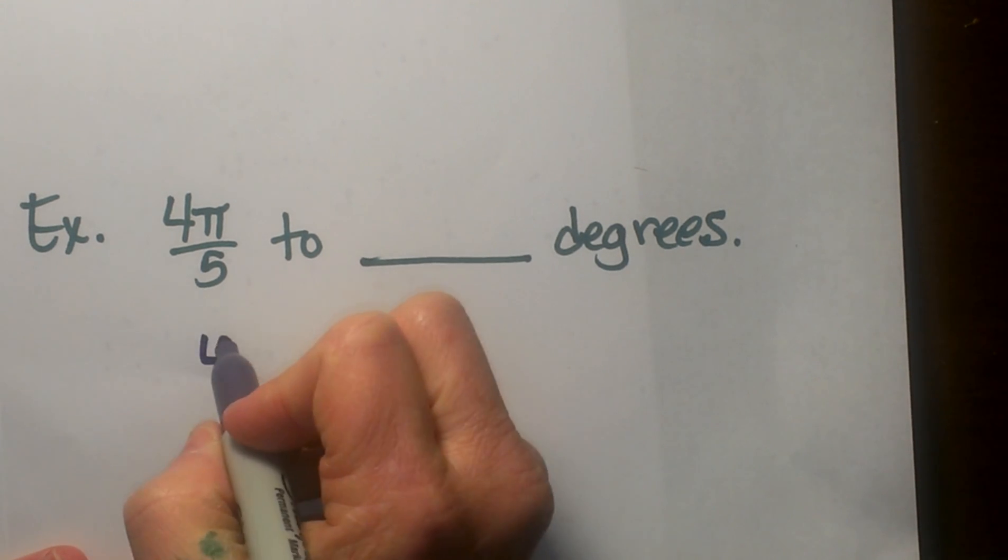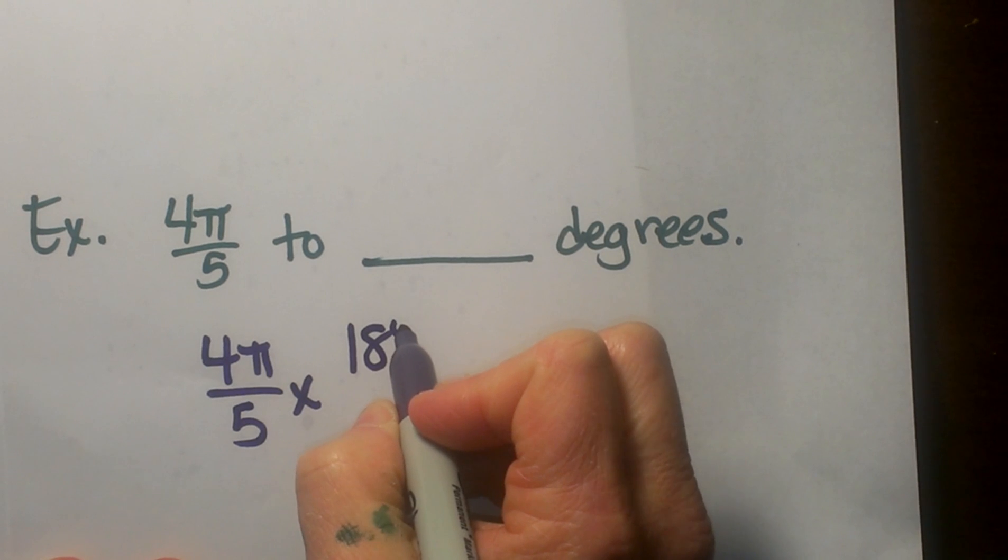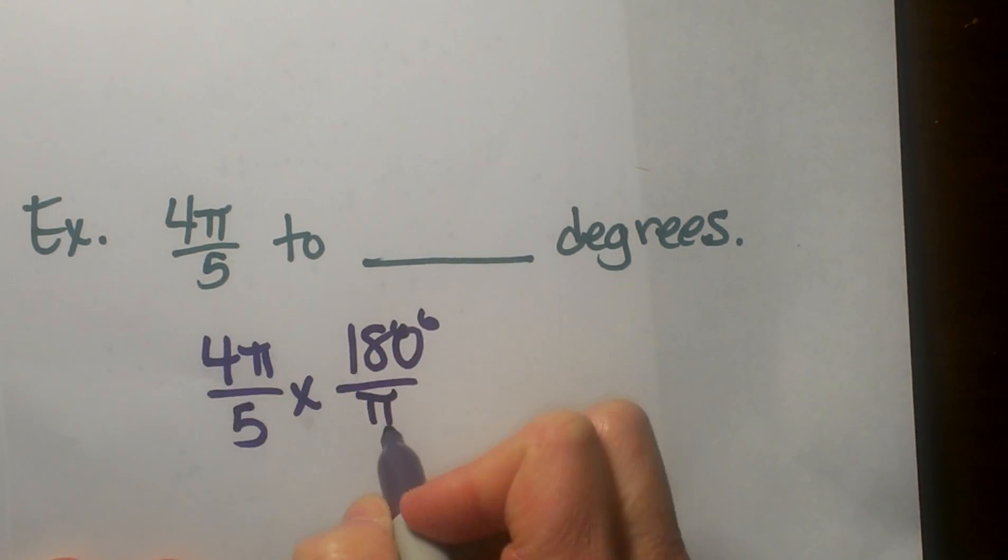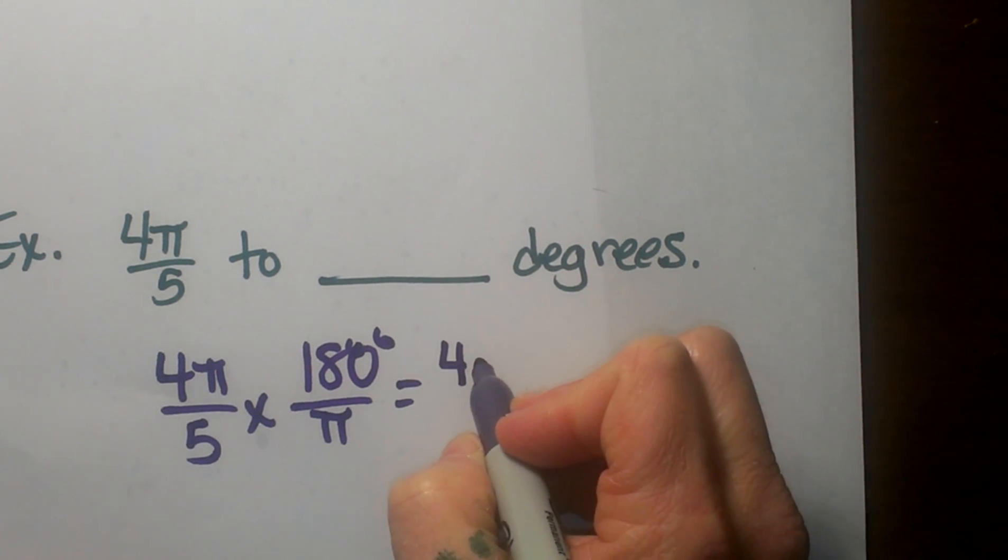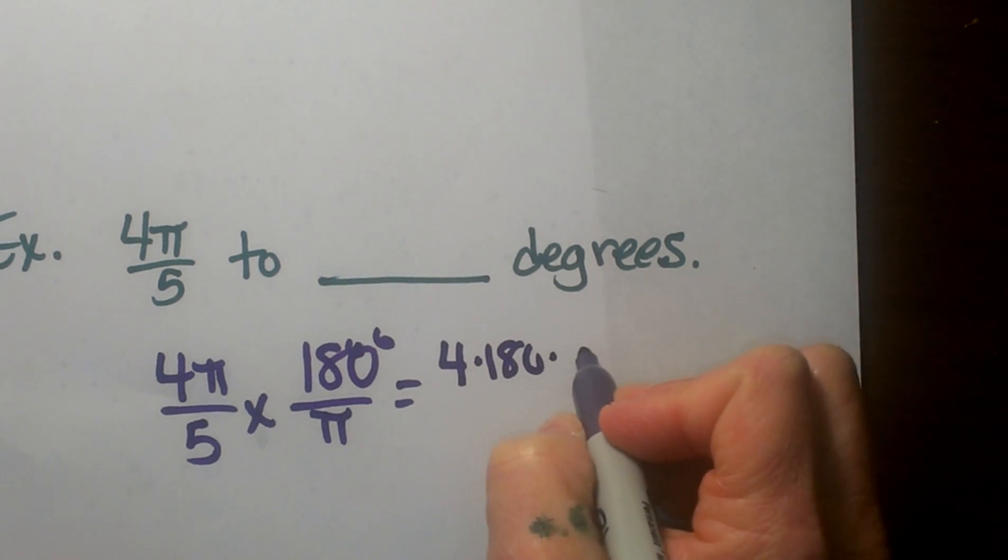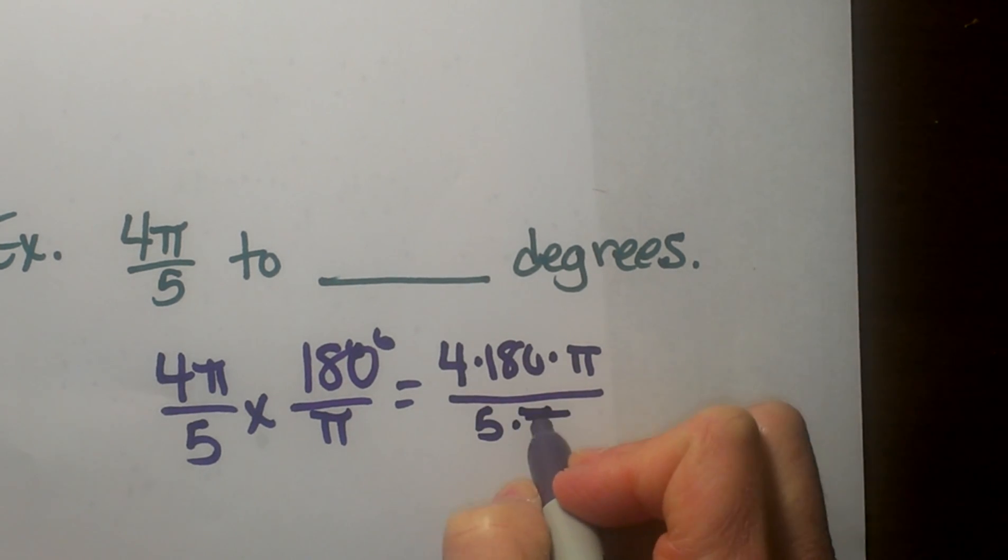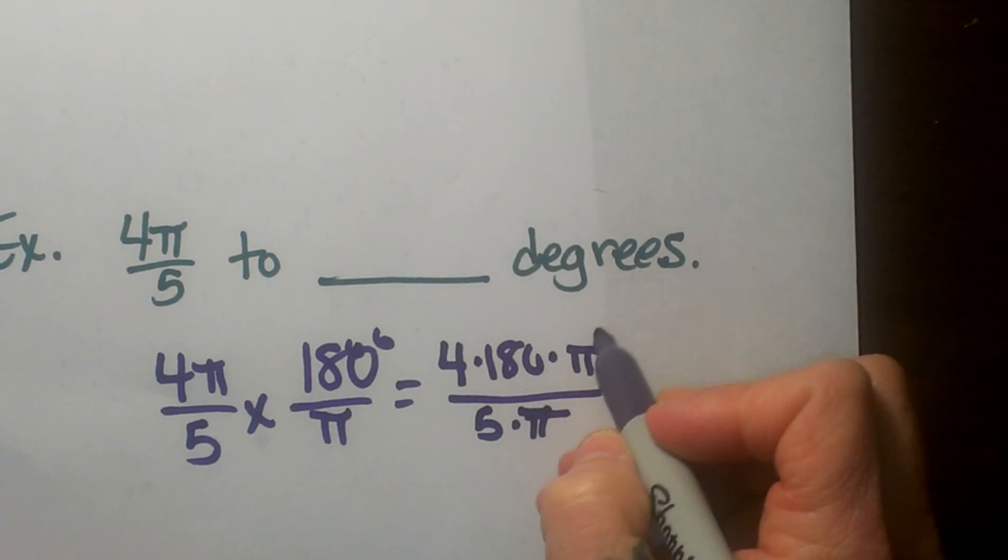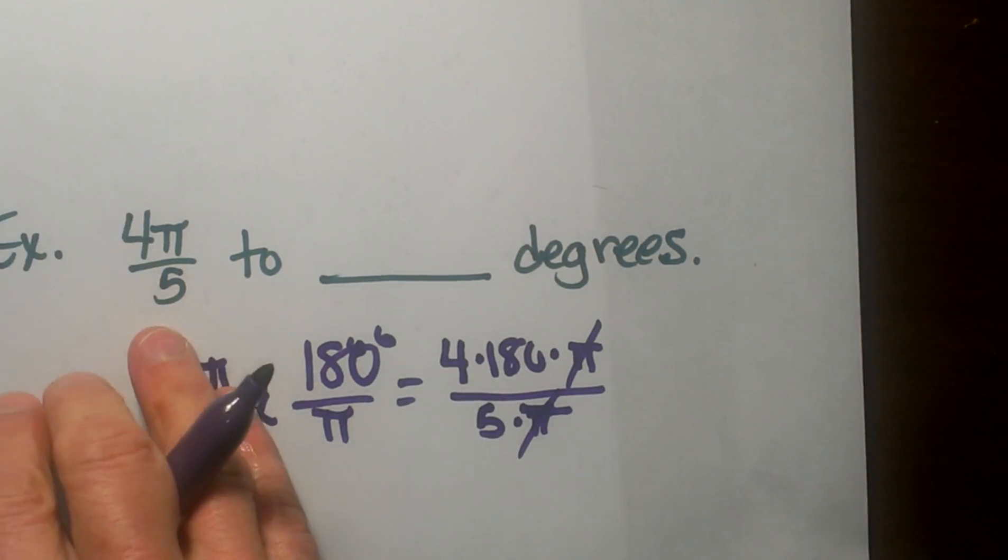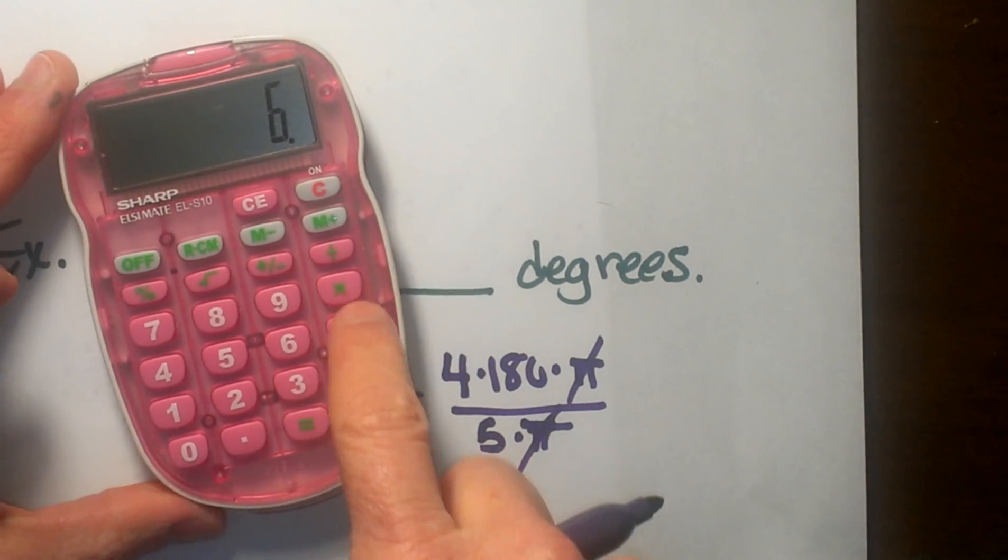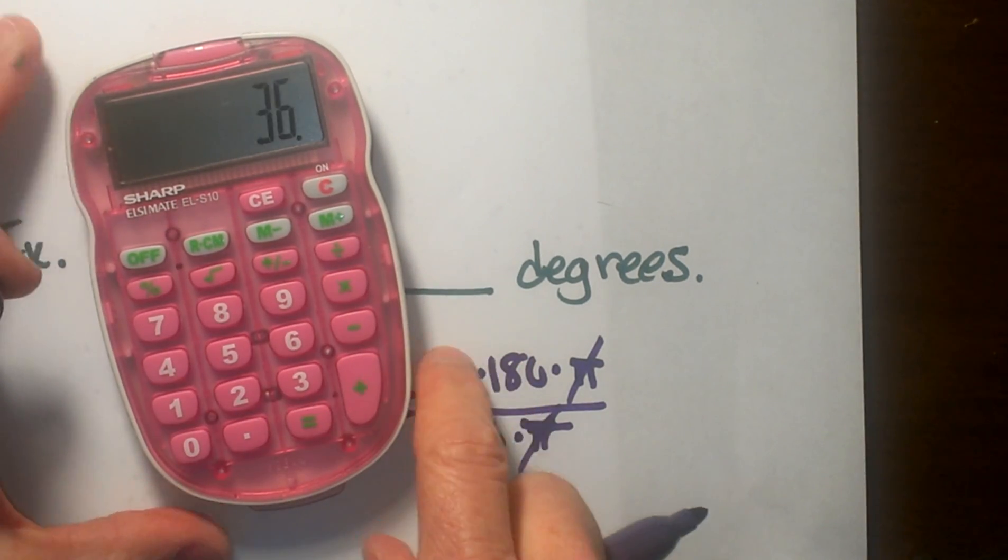I have 4π over 5 and I'm going to multiply it by 180 over π, so my π's will cancel once I cancel them out. Now I'm going to do 4 times 180 times π, that's all on top, over 5 times π. What do you notice cancels? Well the π's cancel out, and I also can take 180 and divide it by 5 because that's a nice clean division. So 180 divided by 5 is 36.